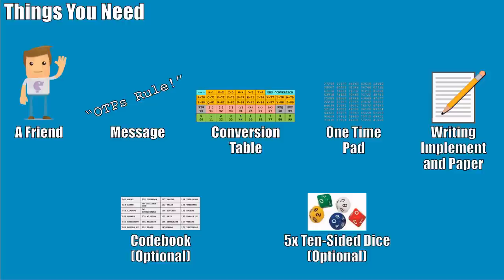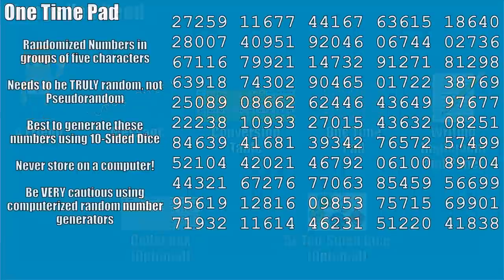Next you need a message — something of importance that warrants using a one-time pad. This is not as simple as picking up your cell phone and texting someone; this is for communication that needs to be absolutely secure between two people. You also need a conversion table to convert normal letters to numbers, your one-time pad, something to write with — usually just paper and a pencil — and optionally a codebook, which is extremely vital. And if you want to generate your own one-time pad, you'll need at least five ten-sided dice.